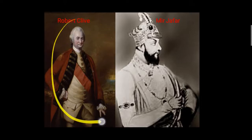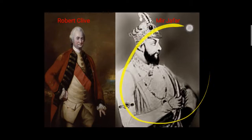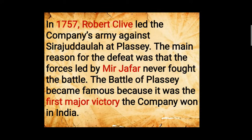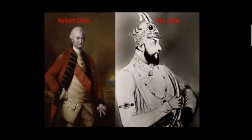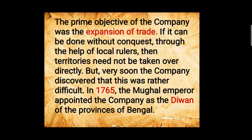Looking at the pictures: the first is Robert Clive and the second is Mir Jafar — the one who helped the company win the battle. The prime objective of the company was the expansion of trade. At first they did their trade with the help of local rulers in India, but after that they understood it was a little difficult to expand the trade that way.